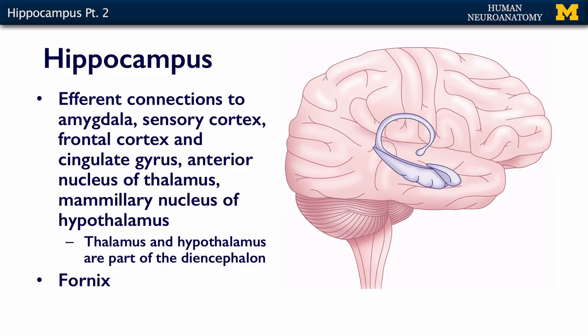Information flowing out of the hippocampus, or efferent information, goes back to the amygdala, the sensory cortex, and the frontal cortex. It also goes to the hypothalamus — specifically the mammillary nucleus of the hypothalamus pictured here — and it sends information to the anterior nucleus of the thalamus. Remember that the thalamus and hypothalamus are part of the diencephalon.